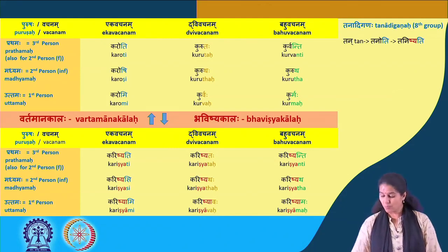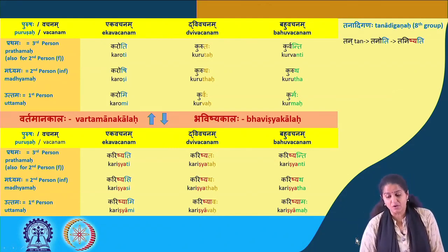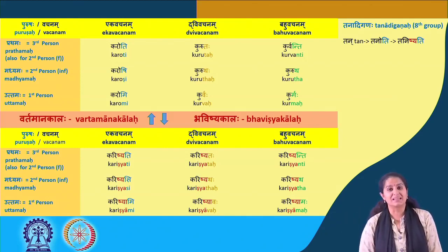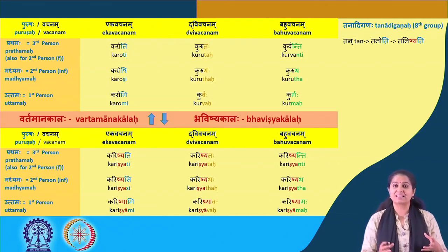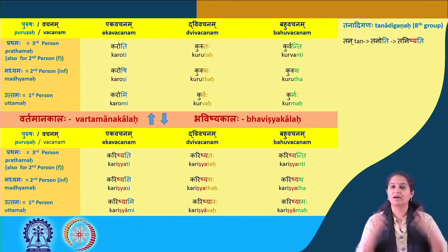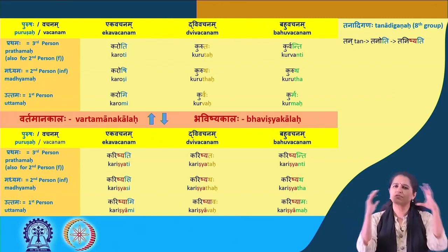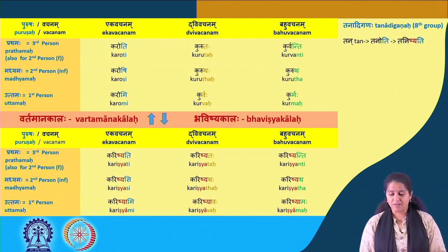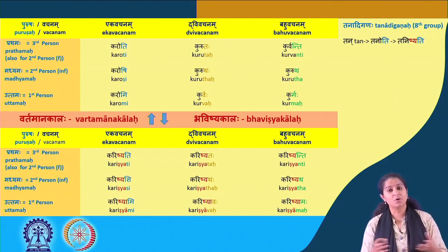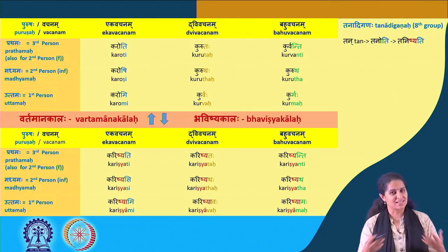The Tanadigana, or eighth group, comes from the root verb Tan, meaning 'to spread' — Tanoti, and the future being Tanishyati. We need to understand that though there are ten groups, every group does not contain the same number of verbs. The Bhavadigana and the Churadigana are enormous groups, while the Tanadigana has very few verbs. But because such an important verb as Kr belongs to that group, it becomes important for us to study it.